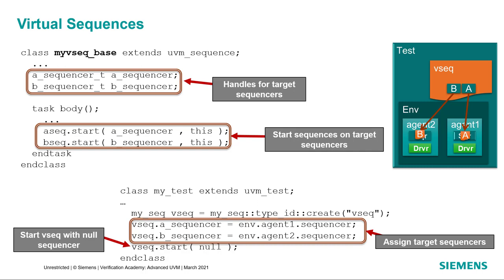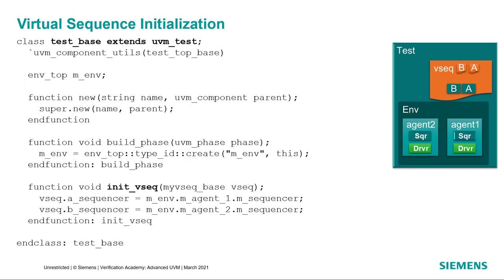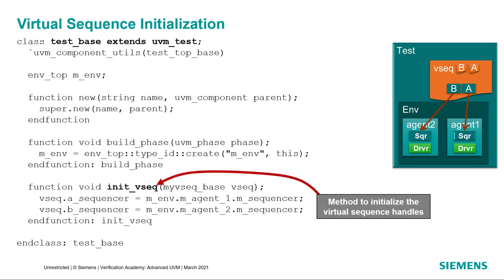It would be helpful to simplify the initialization of this virtual sequence. In our base test, we'll create a method called initVirtualSequence. That will take the virtual sequence as an argument and use it to set up the sequencer pointers. So in the virtual sequence we have two sequencers, ASequencer and BSequencer, and we pass into those the particular sequencers in the environment that we're using. The sequencer paths should be the same for all extensions of this base test, but you have the option of overriding the definition of initVseq in other test extensions if you need to. When we extend the base test into our particular test, we can just call initVsequence and it will automatically take care of setting those sequencer pointers in the virtual sequence.